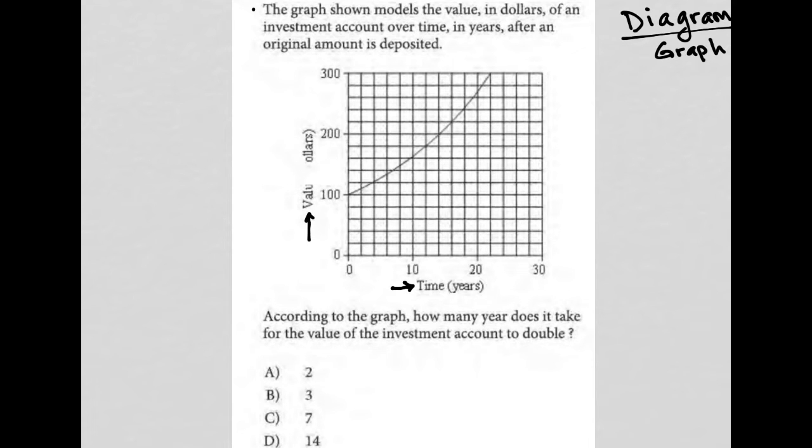It does say that there was an original amount deposited, which would make sense for that to be $100 because that corresponds with time zero. So at zero time, there was $100.